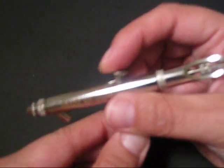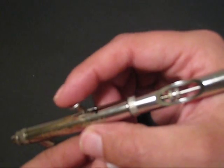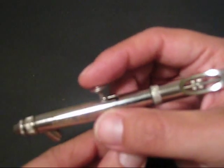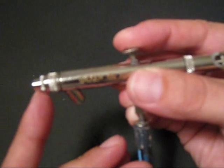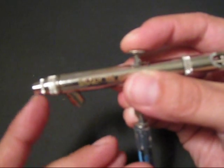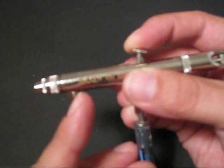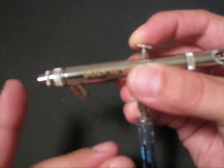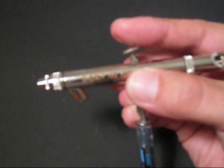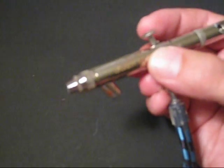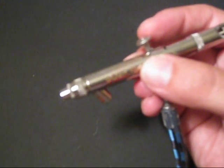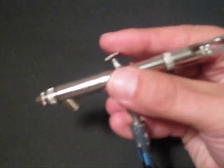As you pull back on the trigger, you can see that the needle is actually moving with the trigger, and what that's doing is basically opening up the nozzle. The further back I pull, the needle's further from the hole, and so there's more space for that paint to come out. As you move the needle forward, that hole gets blocked up, and so the amount of paint coming out of the airbrush decreases.